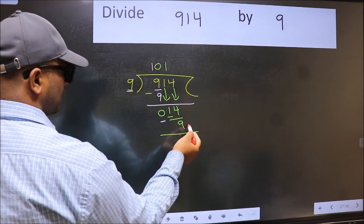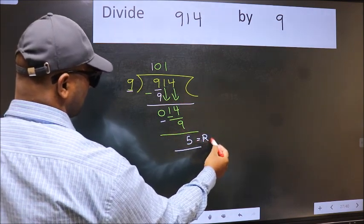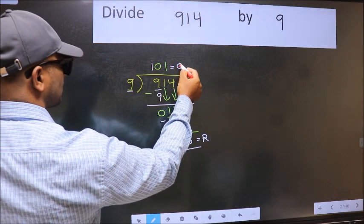No more numbers to bring it down. So we stop here. This is our remainder and this is our quotient.